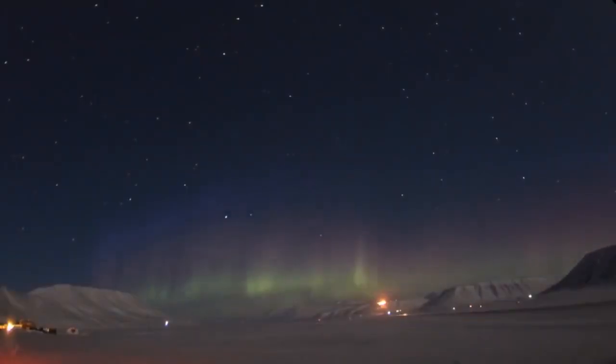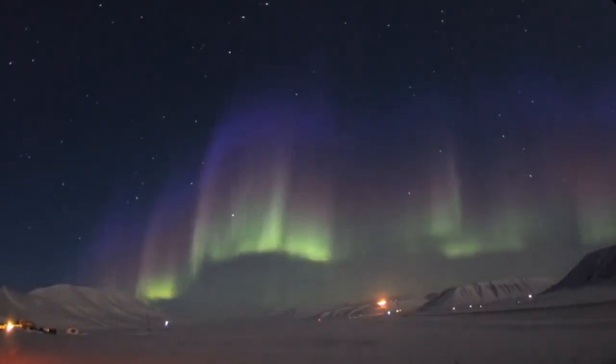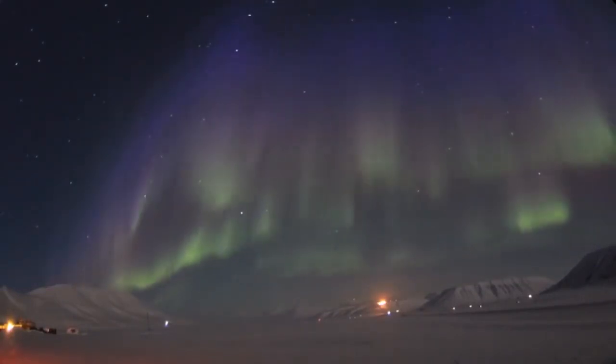When high-energy electrons strike nitrogen atoms, the atoms produce blue auroras at high altitudes, and sometimes magenta auroras at low altitudes.